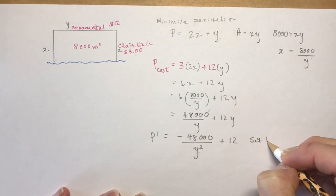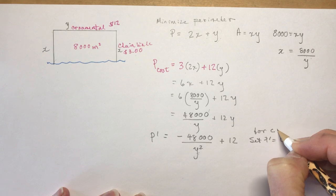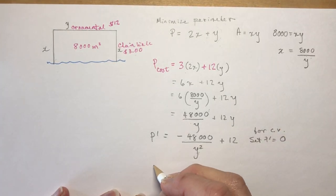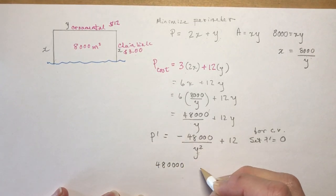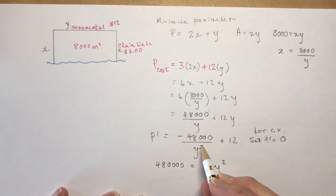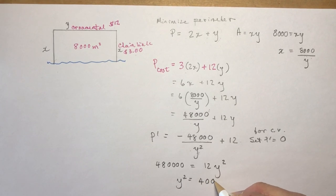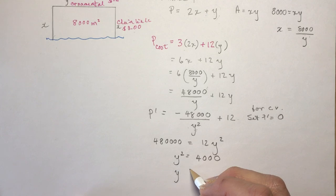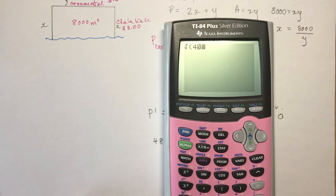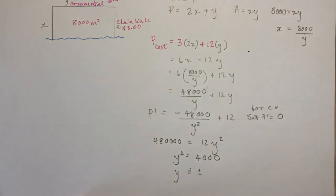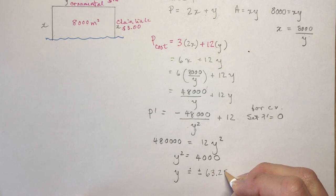Now I'm going to set P' equal to zero for critical values, and that's going to give me—let's bring this one over here to make it positive—so 48,000 equals 12y². Did you catch that? I just brought this over and multiplied by y² all in one step. And that's going to give me 4,000. So that means y is approximately equal to plus or minus, and now you're just going to take the square root of 4,000, and I get 63.25.